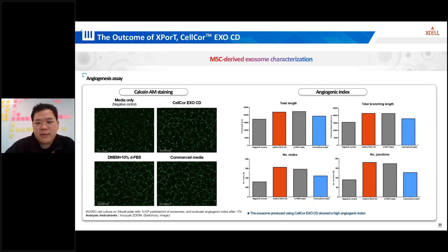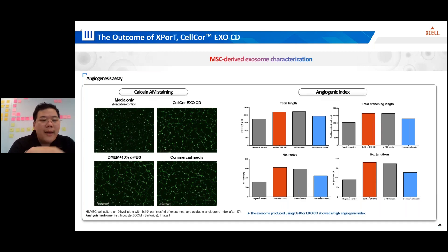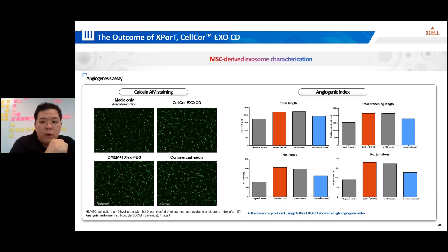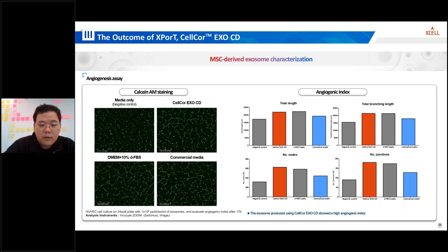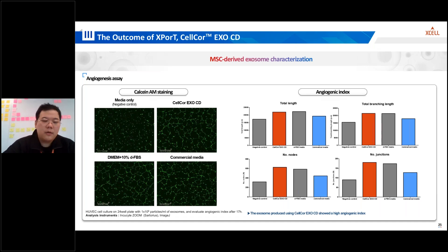We also checked an important characteristic of MSC-derived exosomes — angiogenic potential. To evaluate this, human embryonic umbilical vein endothelial cells were cultured in 24-well plates and exosomes obtained from different media formulations were added at a concentration of 1×10⁹ particles per milliliter in a dose-dependent manner. After 16 to 17 hours, the angiogenic index was evaluated. Four parameters were measured including total length, total branch length, number of nodes, and number of junctions. The research revealed that exosomes produced using CELCO XCD exhibit a high angiogenic index, underscoring their potential in promoting blood vessel formation and tissue regeneration.